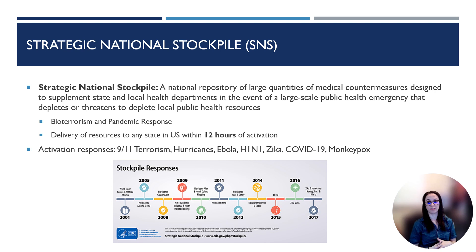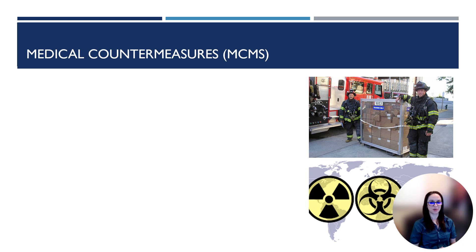In 2021, during an unaccompanied children crisis, critical PPE and medical supplies at intake sites were sent to help unaccompanied children at U.S. borders. And again in 2022, vaccines and antiviral drug treatments were sent out to states to help with the monkeypox outbreaks. So you can see that the SNS is activated for a range of different emergencies and life-saving supplies can be sent to any state.